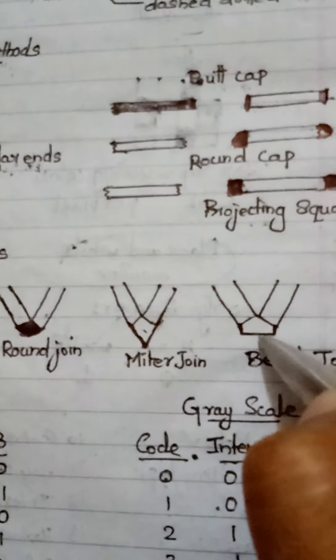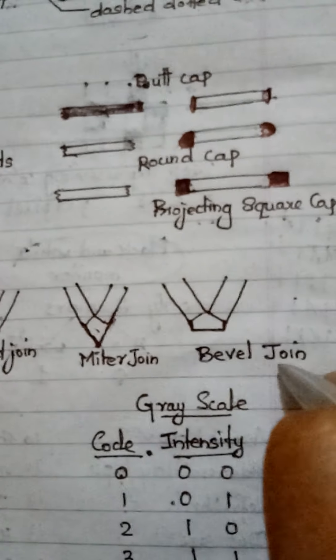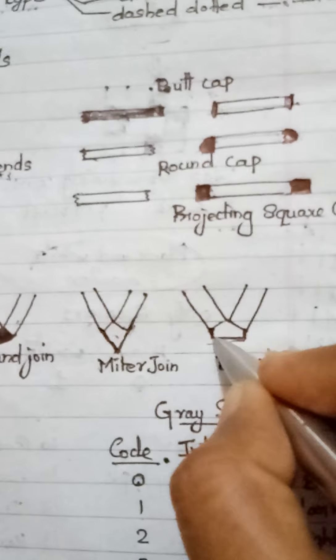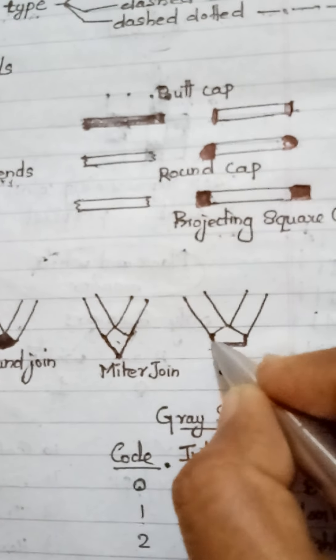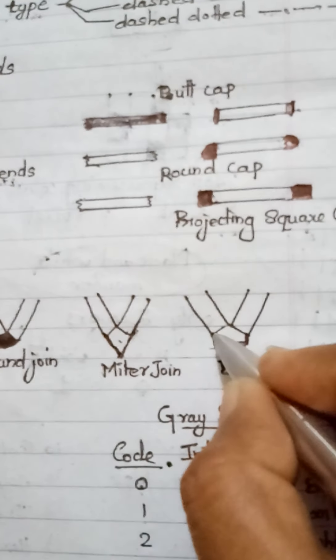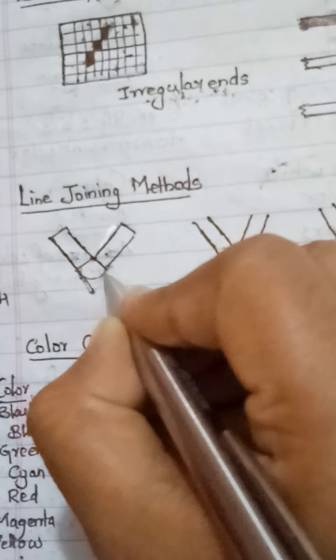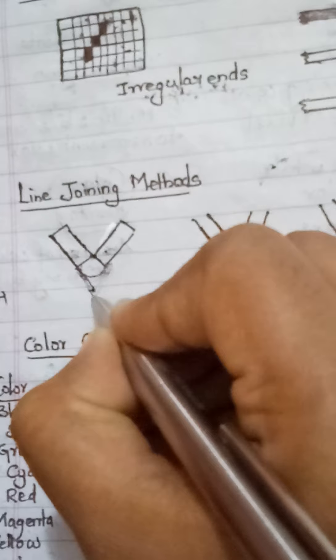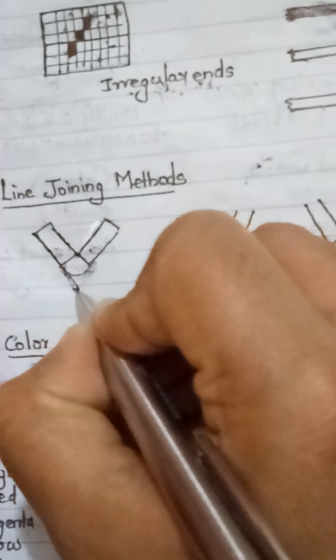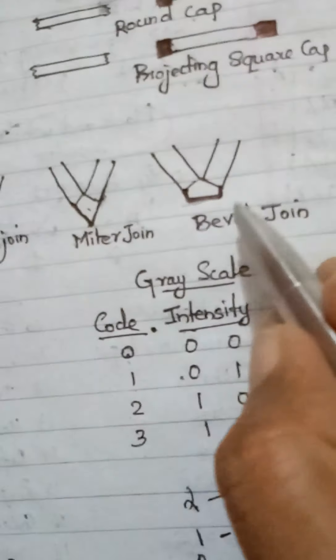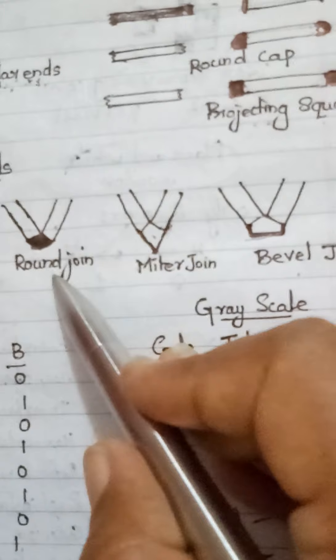The third joining method is bevel join. In bevel join, a projecting square is placed at the end of the thick lines at the joining point. So the three types of line joining methods are: round join, miter join, and bevel join. This is all about the primitive line — we have learned line attributes, line capping methods, and line joining methods.